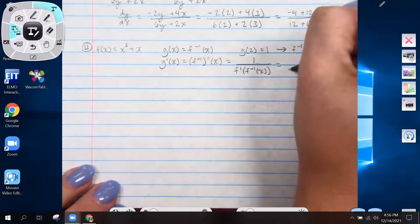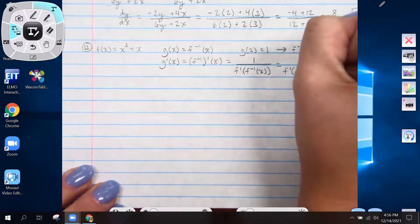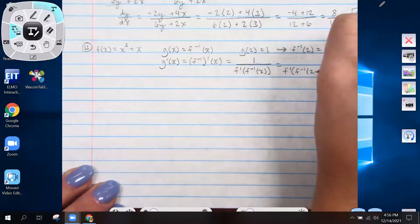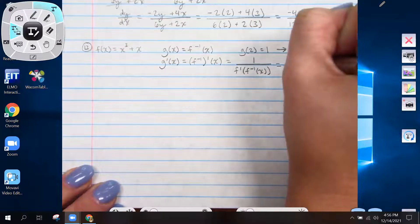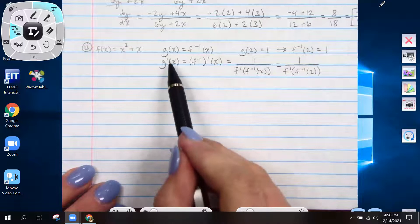So if we plug in what we know, we don't know f prime yet, but we do know we're looking for f inverse of 2, because we're looking for g prime of 2.